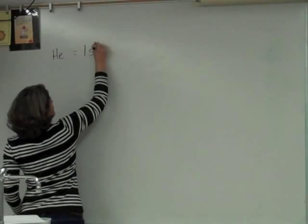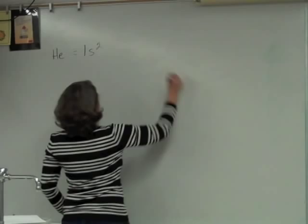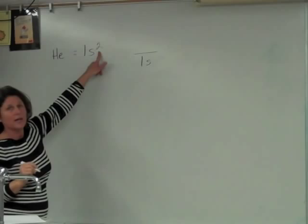What would an orbital diagram for helium look like? We are going to make a line and we are going to call this the 1s orbital. How many electrons do we have in there? We have two, so it's a full orbital.